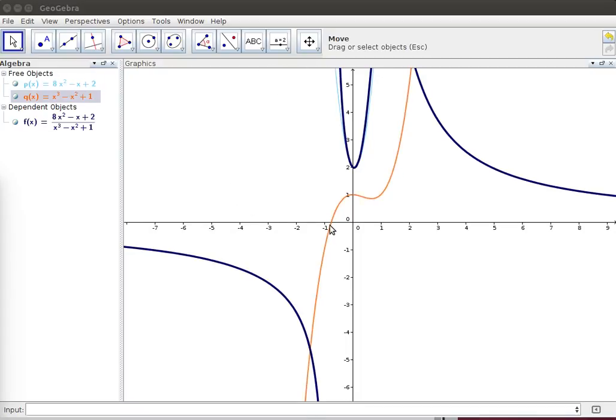Now notice that denominator has a zero just a little bit over here. There's going to be a vertical asymptote right here.